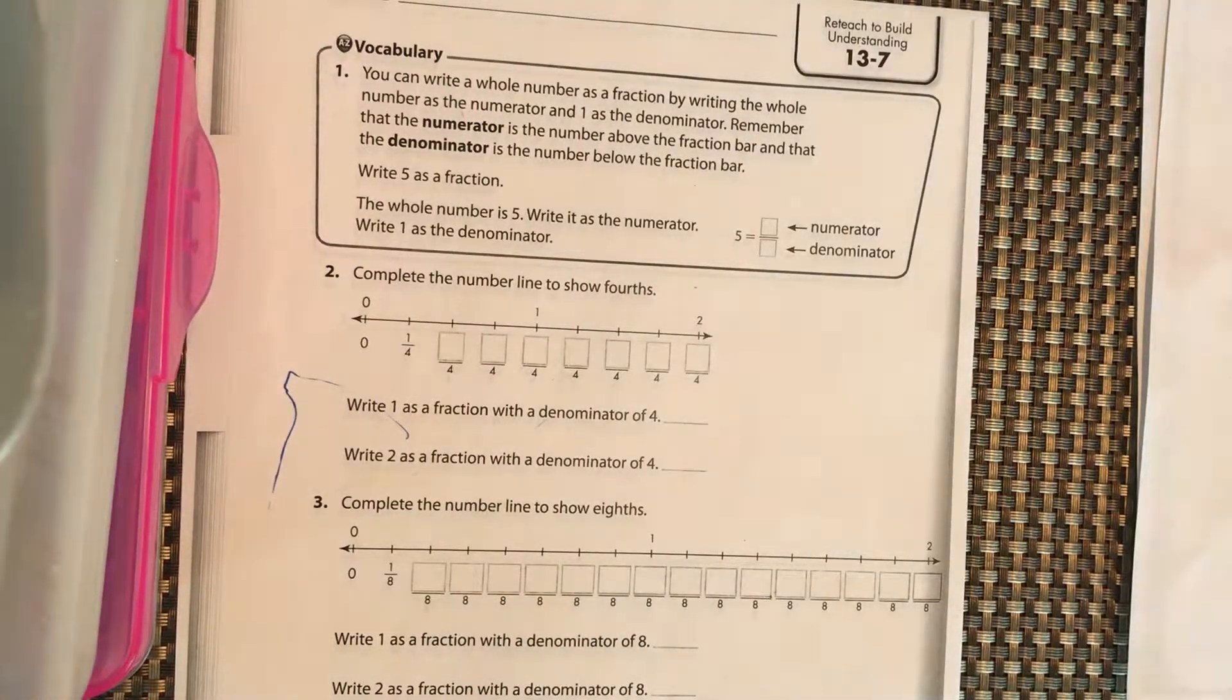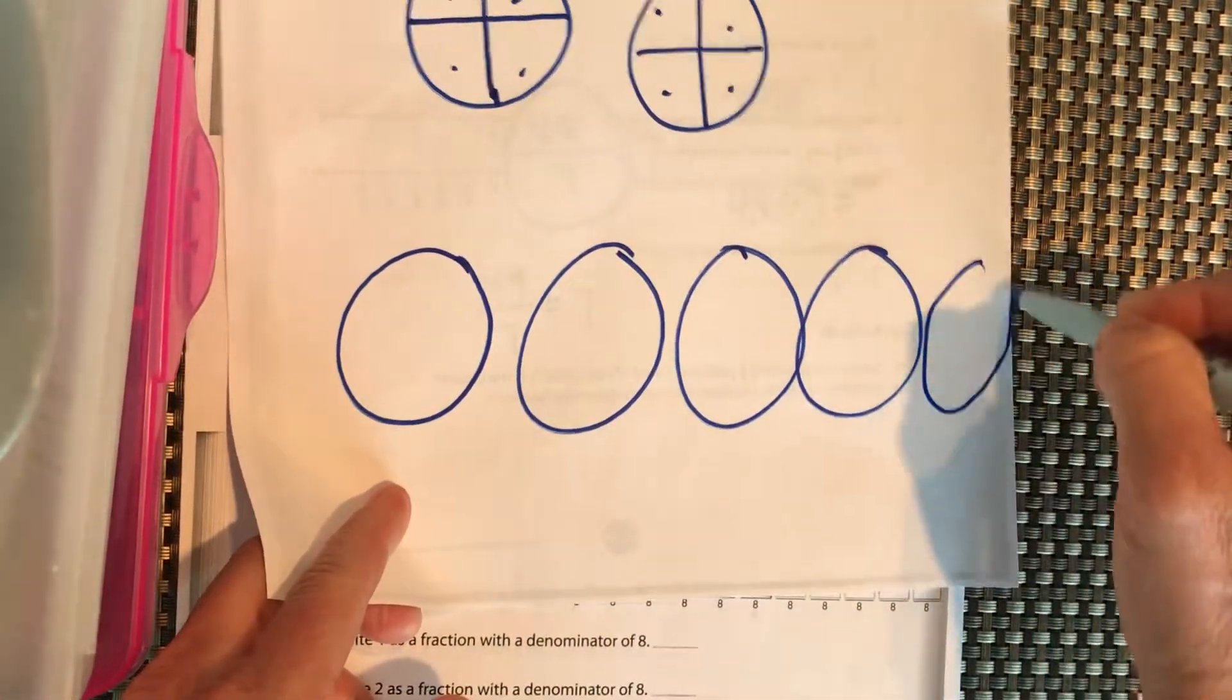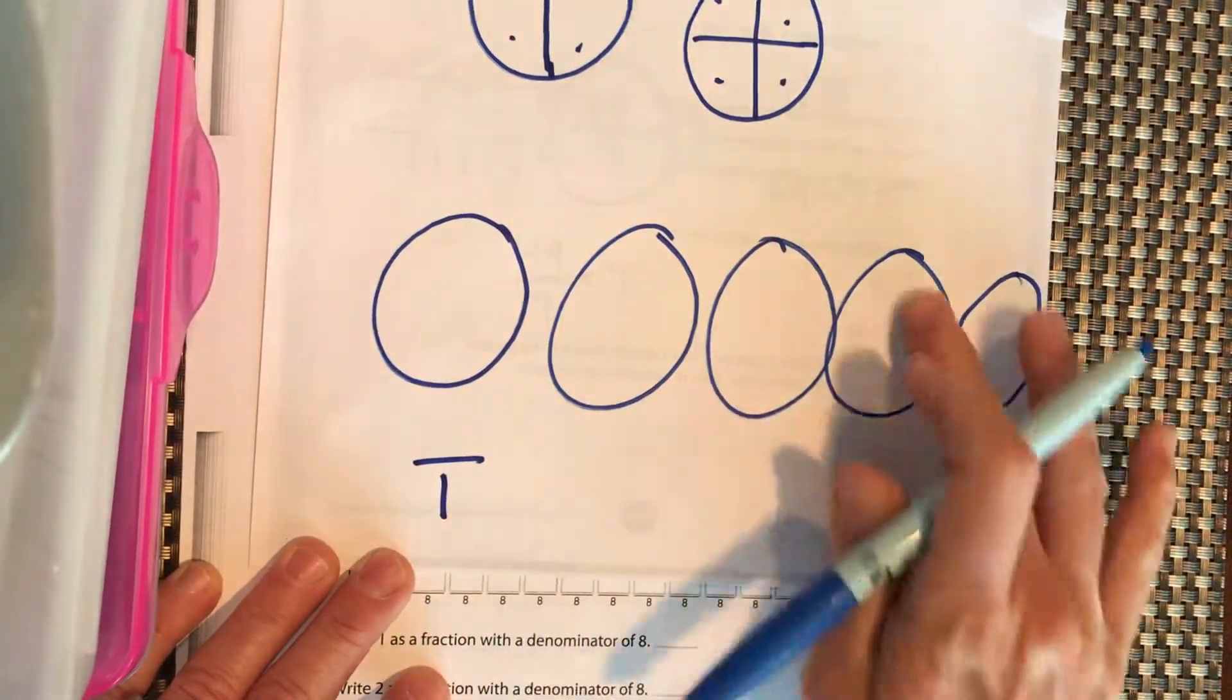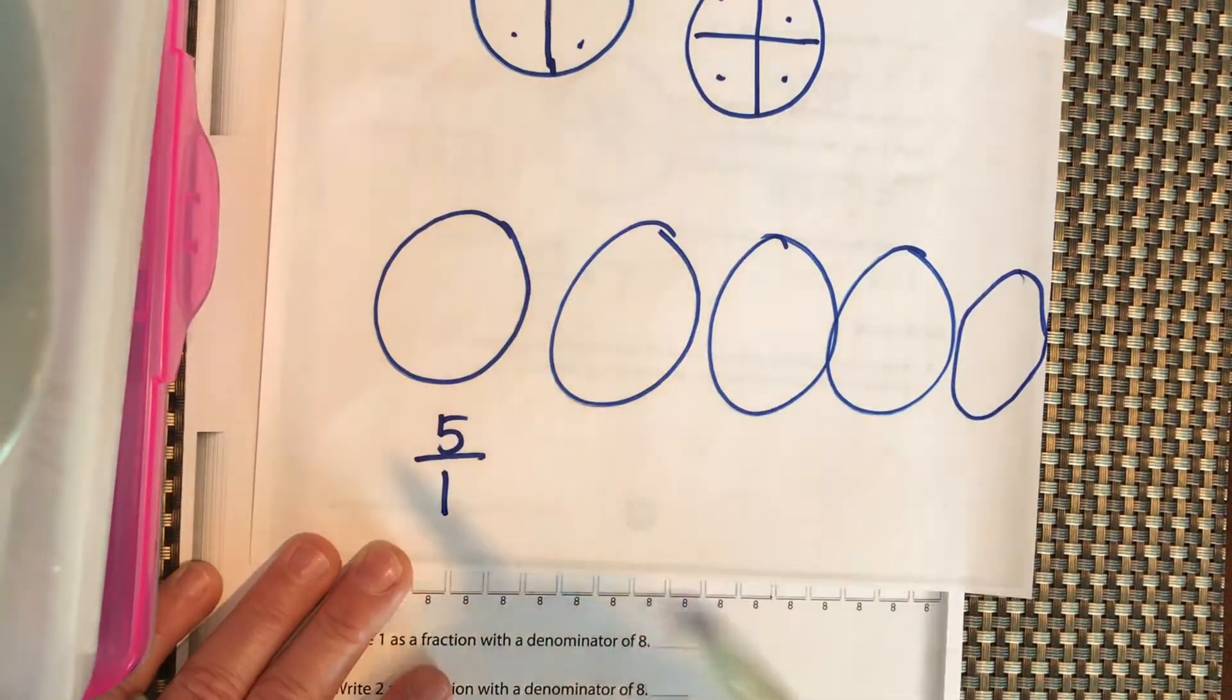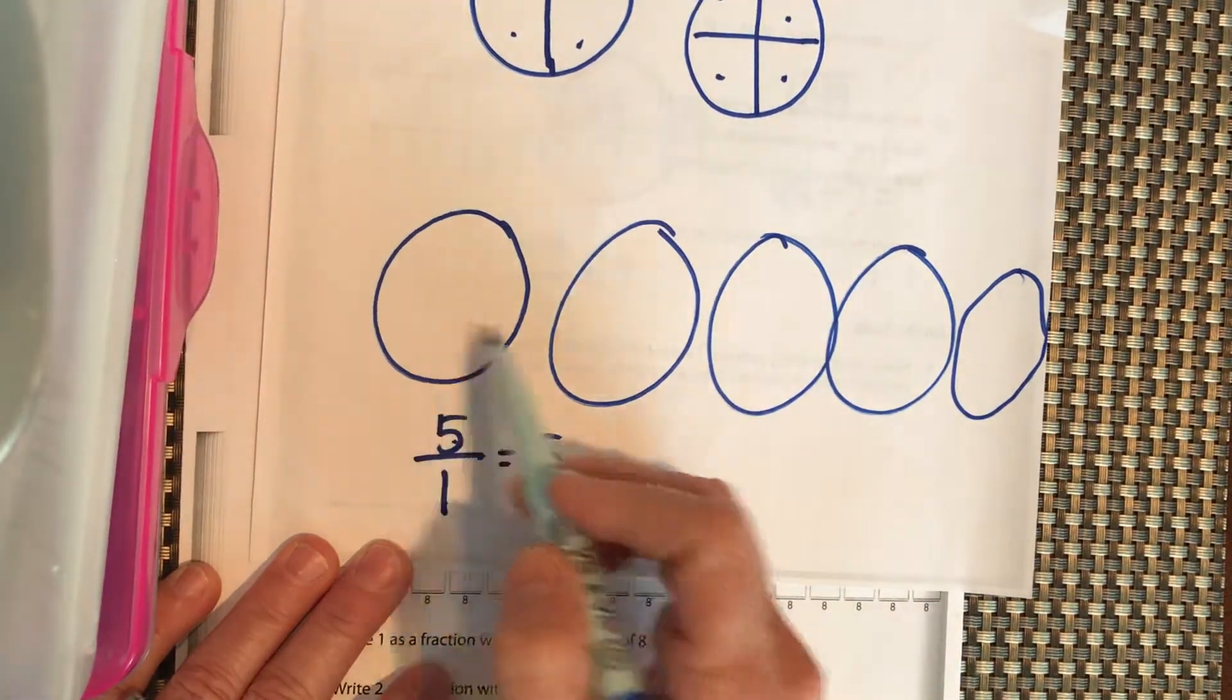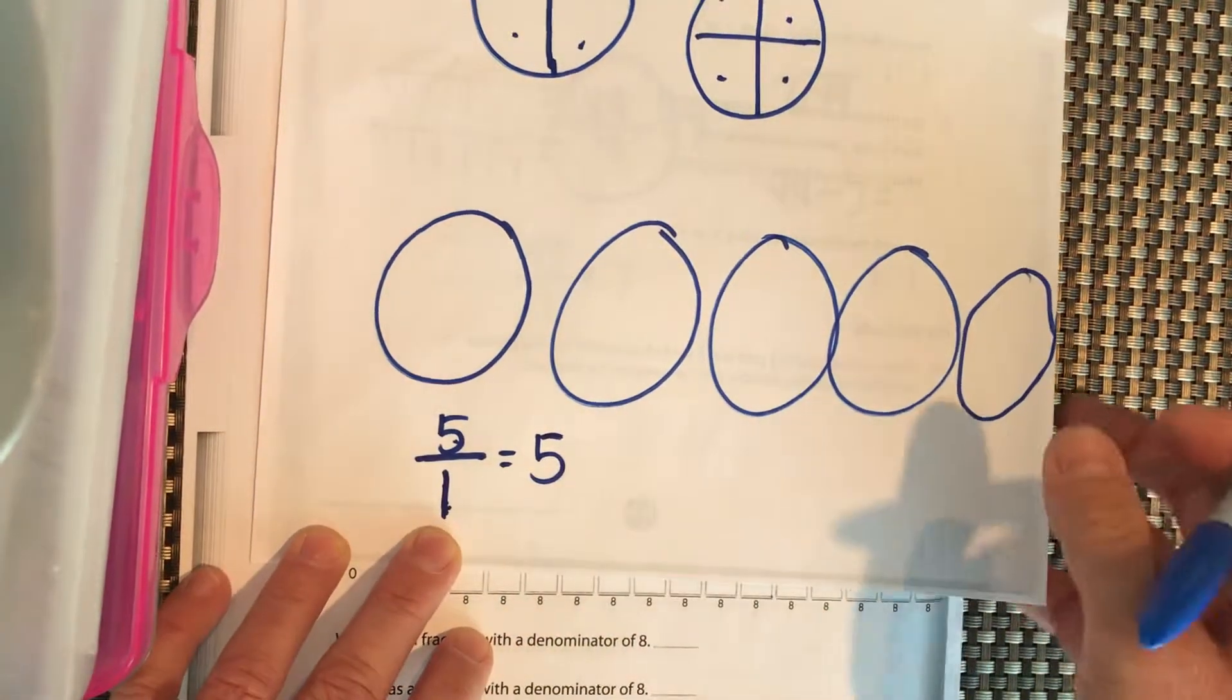So write whole number 5 as a fraction. Let's say I have 5 whole pizzas. I didn't cut them at all. So each pizza is in 1 whole part, and I have 5 of those whole parts. So while this looks really strange, it actually is not. And what is 5 divided by 1? 5. So you have 5 whole parts. This means I didn't divide each part into anything. It's still 1 whole part, and I have 5 of them, so I have 5 wholes.